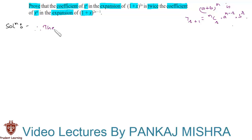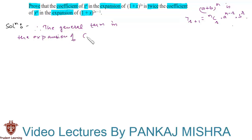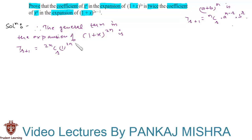The general term in the expansion of (1 + x) whole raised to 2n is T(r+1) = 2nCr into 1 raised to (2n minus r) into x raised to r. This is equal to 2nCr into 1 — since 1 raised to anything is 1 itself — into x raised to r.